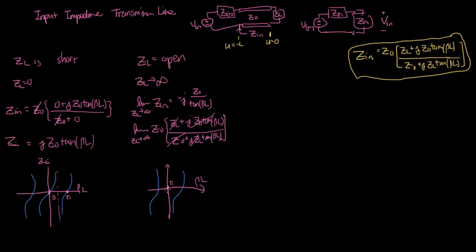Compared to the short circuit case, the open circuit result is centered at π/2 rather than the origin, giving more flexibility in choosing the sign of reactance. This is very useful because an open or short in a circuit is often much easier to fabricate than an actual inductor or capacitor. So a shorted or open transmission line stub can act as a virtual inductor or virtual capacitor, which is hugely useful for impedance matching.